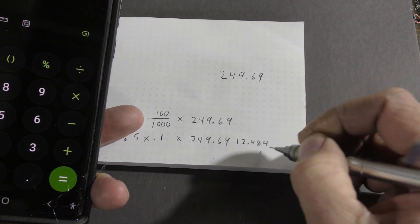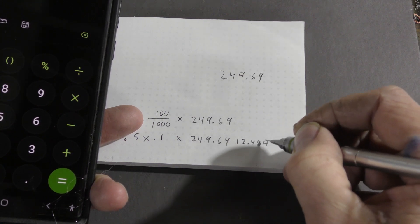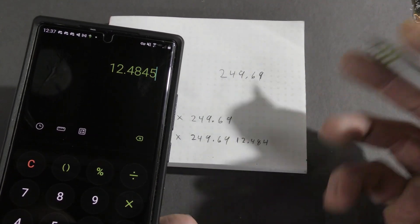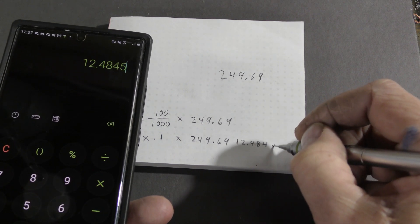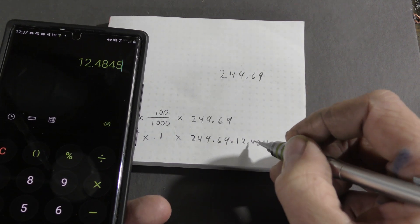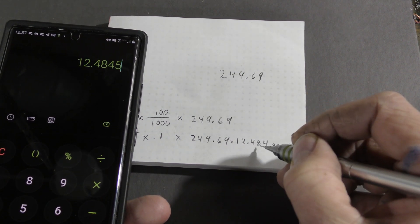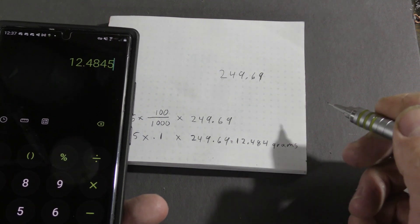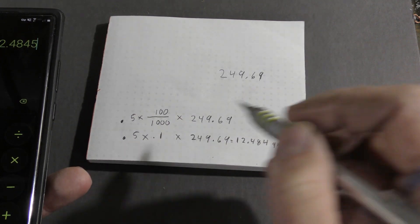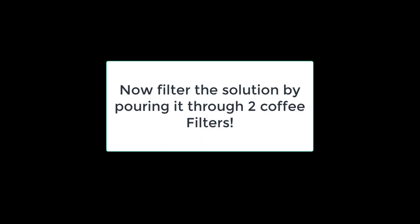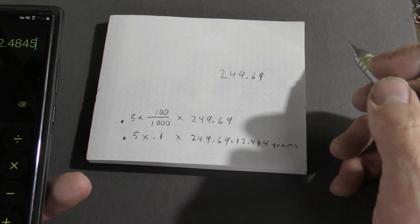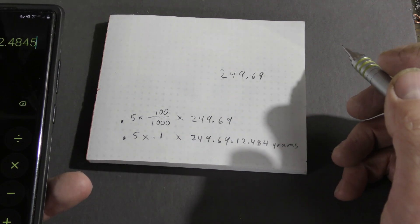12.48 grams is the amount of copper sulfate pentahydrate you need to weigh out and mix with 100 mL of distilled water to get a 0.5 molar solution. Then trap that between two planes of plexiglass just like we did for the distilled water cuvette.